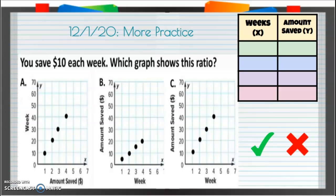December 1st, 2020, more practice. Alright, so you save $10 each week. Which graph shows this ratio? $10 each week, so for one week we can fill in this little ratio table to help us.